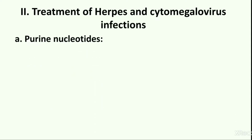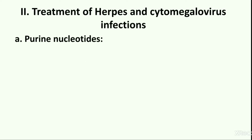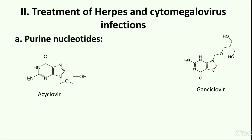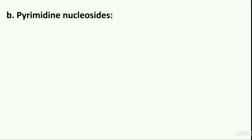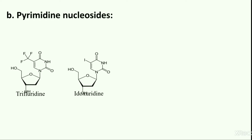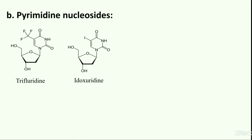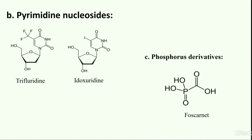The second category includes agents used in the treatment of herpes and cytomegalovirus infections. This category is composed of three subcategories. The first subcategory includes purine nucleosides such as acyclovir, ganciclovir and vidarabine. The second subcategory is pyrimidine nucleosides having drugs such as trifluridine and idoxuridine. The last subcategory includes foscarnet, which is a phosphorus derivative molecule.